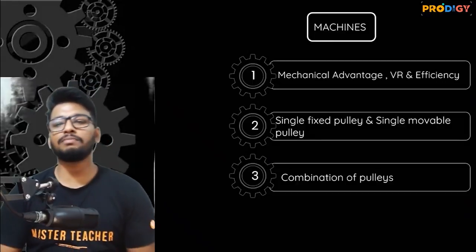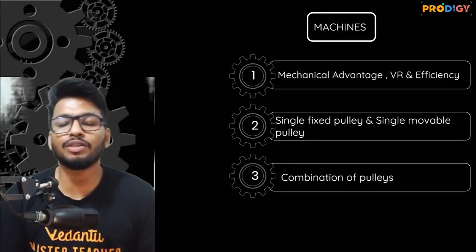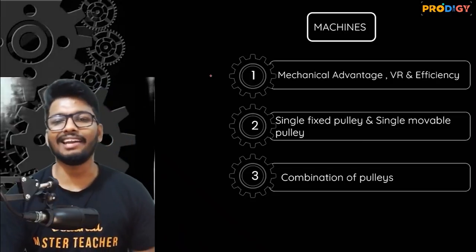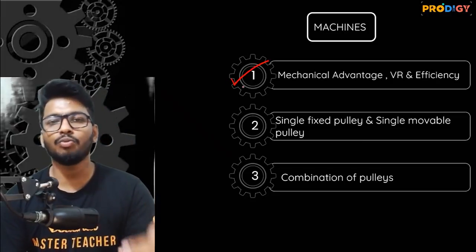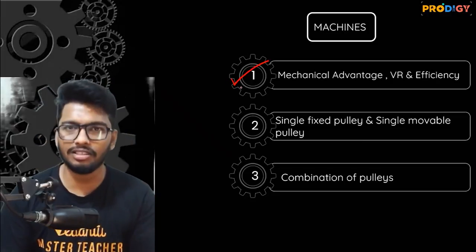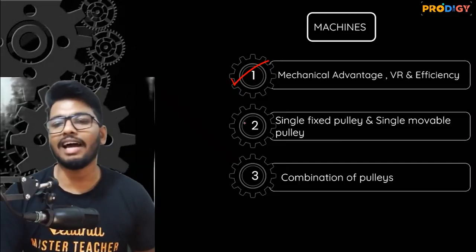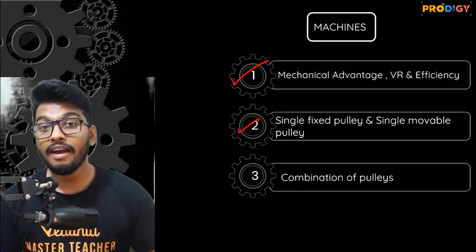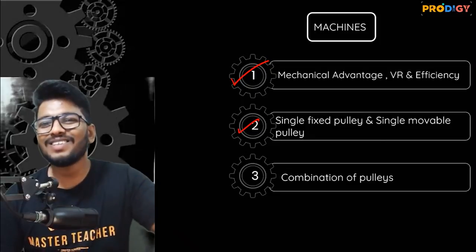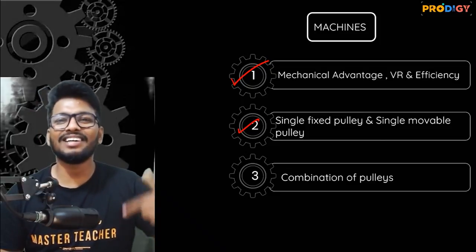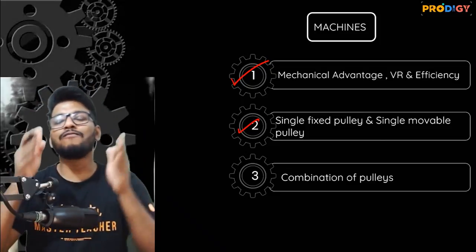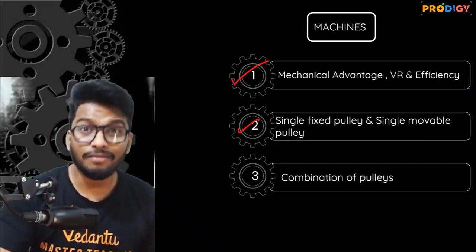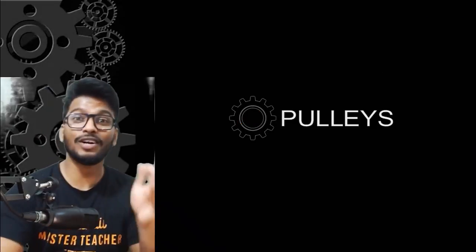In the previous session we understood what mechanical advantage, velocity ratio, and efficiency of a machine are. Today we'll understand what a single fixed pulley and a single movable pulley are, and we'll also get the mechanical advantage, velocity ratio, and efficiency for both types of pulleys. Without wasting any time, let's get into it.